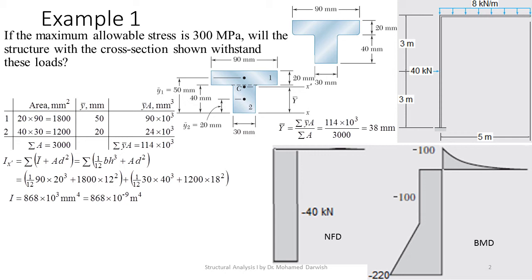For rectangle 1, it's 90 times 20³ over 12, this is the original I, plus area 1, which is 1800 times 12². Why 12²? Because this is the distance 50 minus 38, so this is 12².